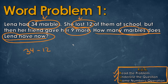So if we subtract 34 minus 12, we can do this by doing long subtraction. We always start at the right side when we subtract. So 4 minus 2 will give us 2. We move on to the next column, so now we have 3 minus 1 will give us 2. So we solve for the first part of this.